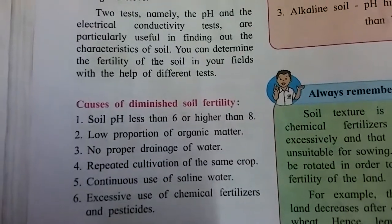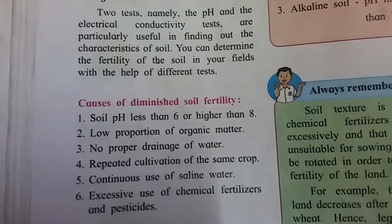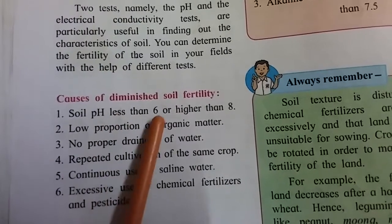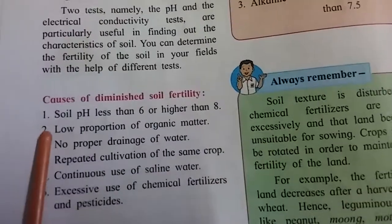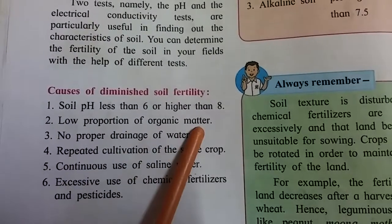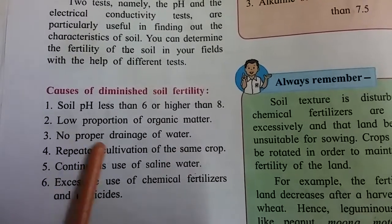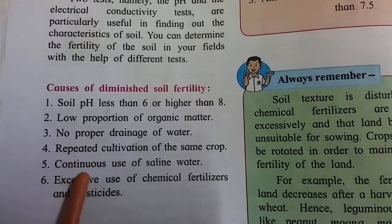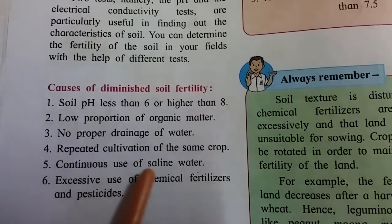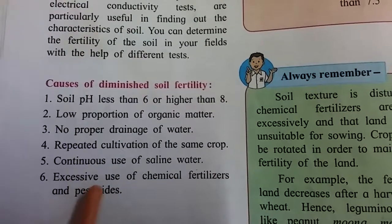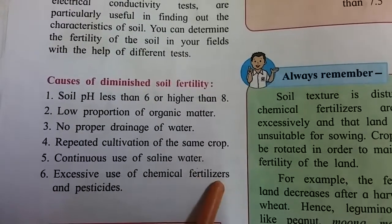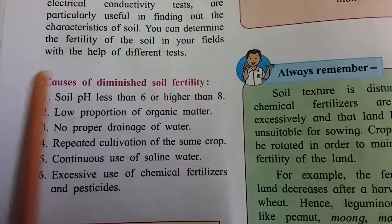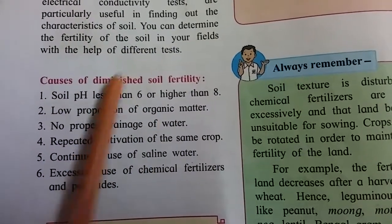Causes of diminishing soil fertility: soil pH less than 6 or higher than 8; low proportion of organic matter; no proper drainage of water; repeated cultivation of the same crop; continuous use of saline water; and exclusive use of chemical fertilizers and pesticides.